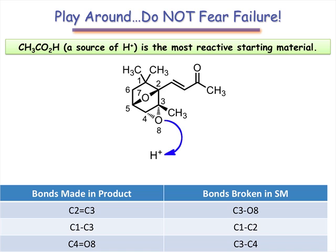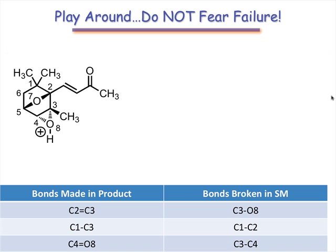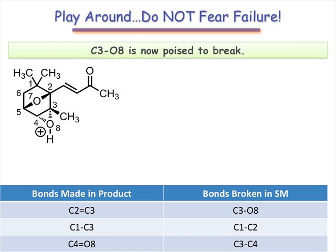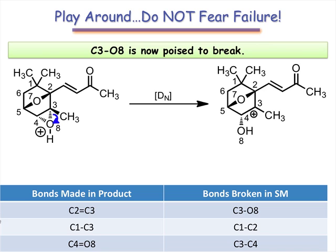In the next step, we'll carry through the protonation to its most logical conclusion: opening of the epoxide via a DN step. Atom mapping tells us that the C4O8 bond remains intact, so we should break the C3O8 bond. Doing so leaves a carbocation on carbon 3, and we've broken one of the bonds we needed to break. In addition, carbon 3 is set up for additional chemistry as a carbocation.